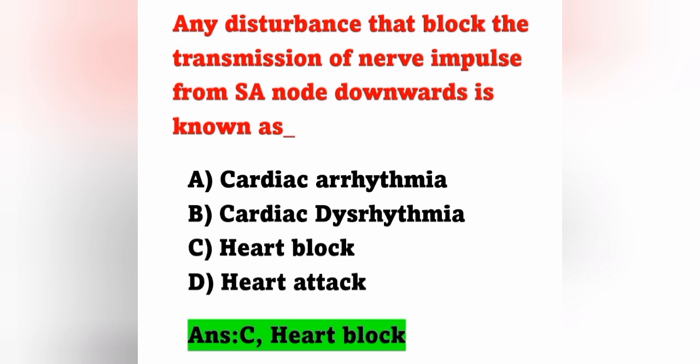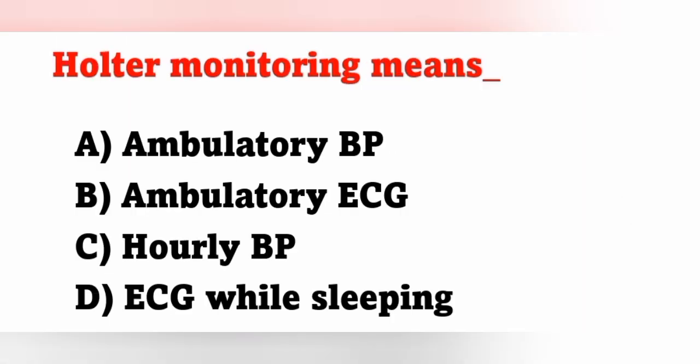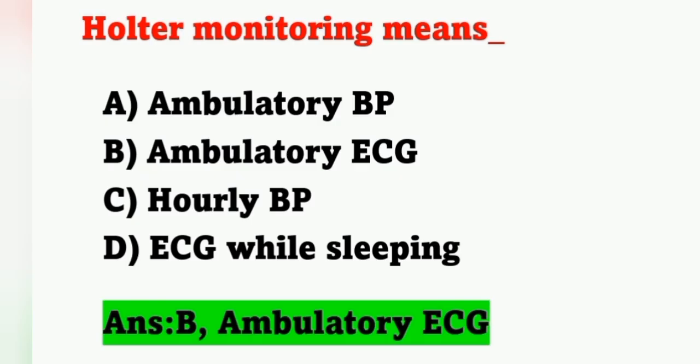Next question: Holter monitoring means? Options: A) Ambulatory BP, B) Ambulatory ECG, C) Hourly BP, D) ECG while sleeping. Holter monitoring is also known as ambulatory electrocardiography. This Holter monitor is used for ECG tracing and may be recorded continuously for a day or longer on an outpatient basis. Option B, ambulatory ECG, is the correct answer.